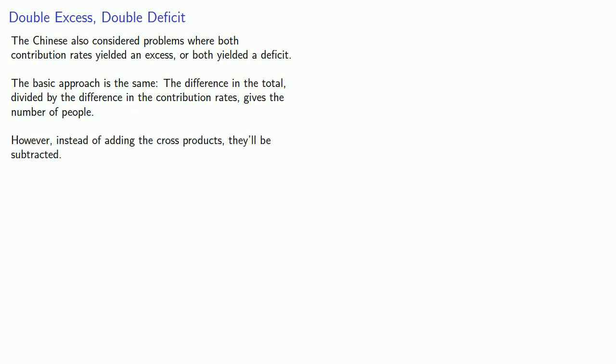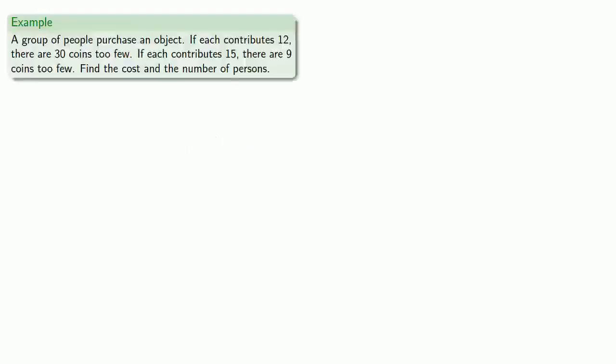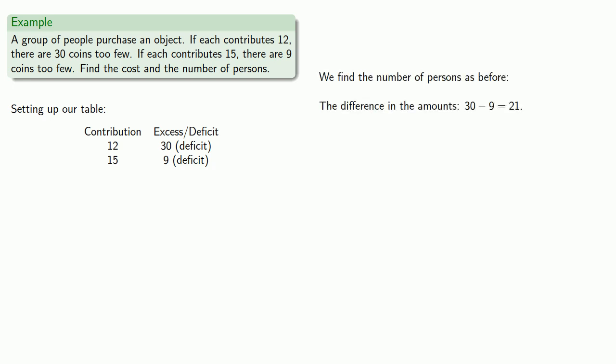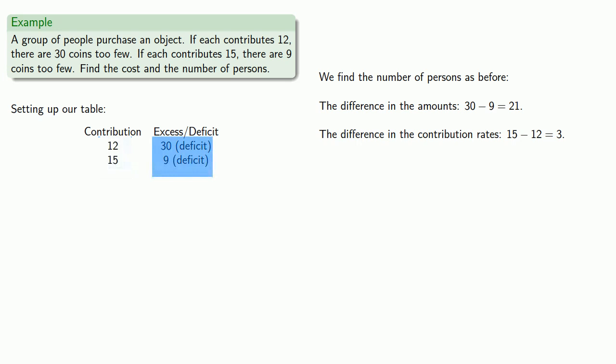The Chinese also considered problems where both contribution rates yielded an excess or both yielded a deficit. The basic approach is the same: the difference in the totals divided by the difference in the contribution rates gives the number of people. For example: if each contributes 12 there are 30 coins too few; if each contributes 15 there are 9 coins too few. The difference in the amounts, 30 minus 9, is 21; the difference in contribution rates, 15 minus 12, is 3. So 21 divided by 3 gives 7 persons.